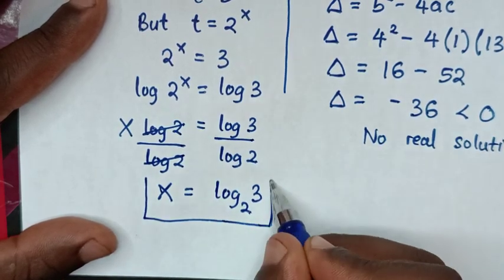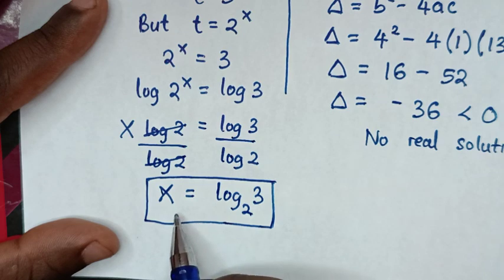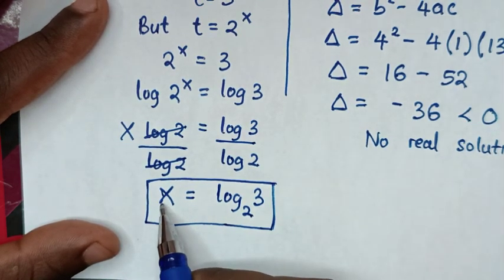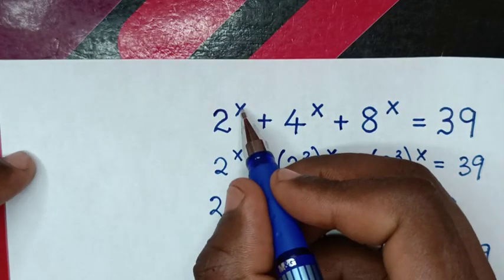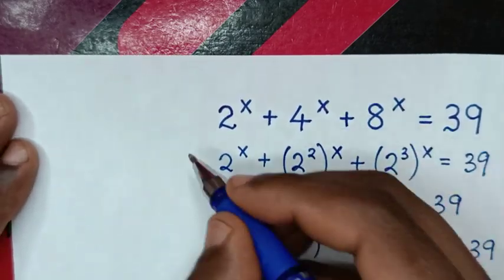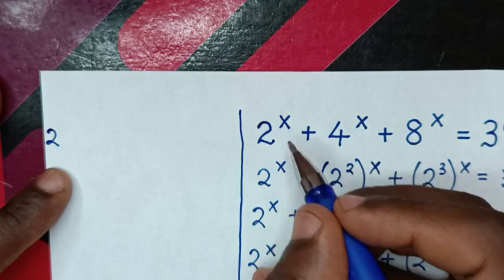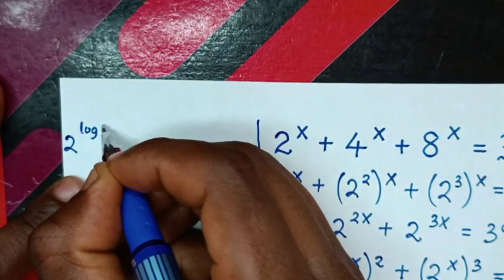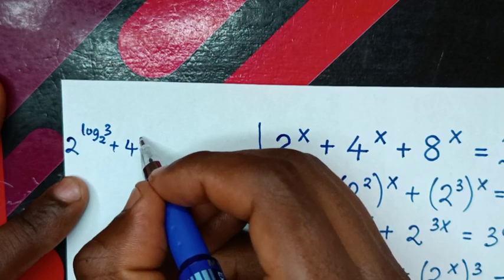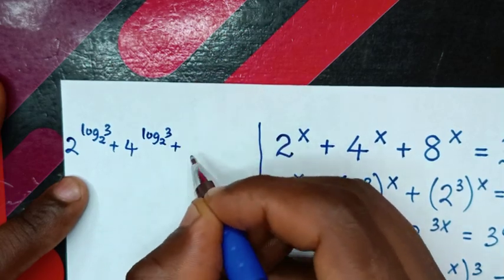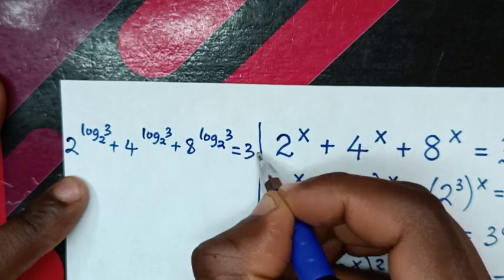Therefore, the final answer is x = log₂(3). To verify, we substitute x = log₂(3) back into the original equation: 2^(log₂3) + 4^(log₂3) + 8^(log₂3) — is it equal to 39?